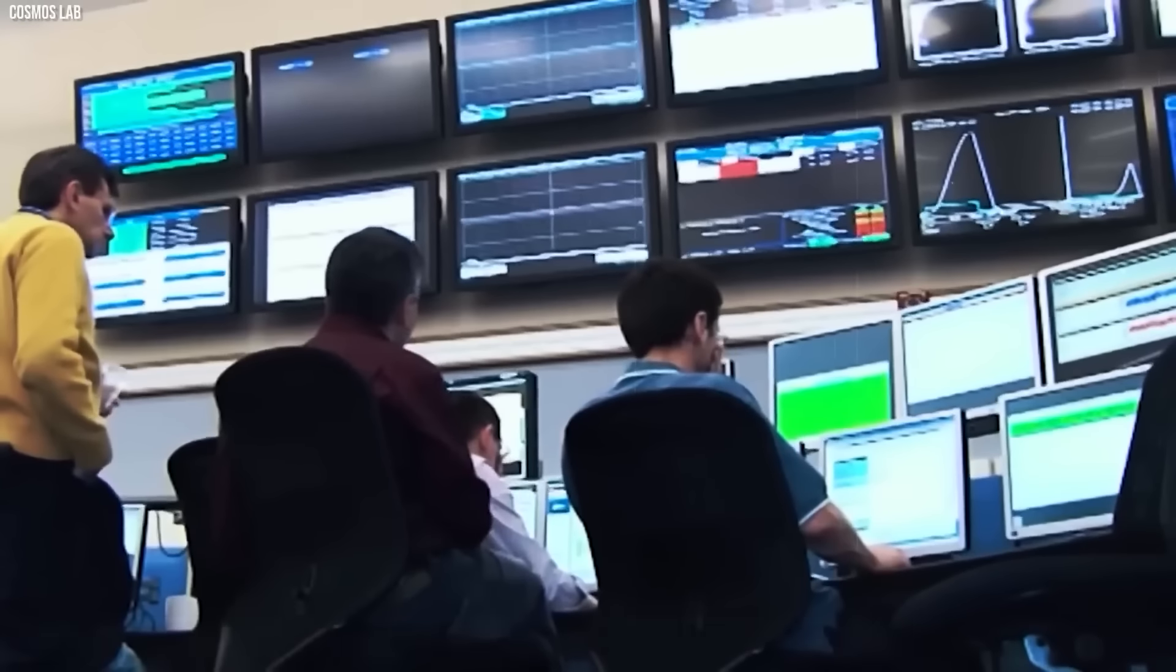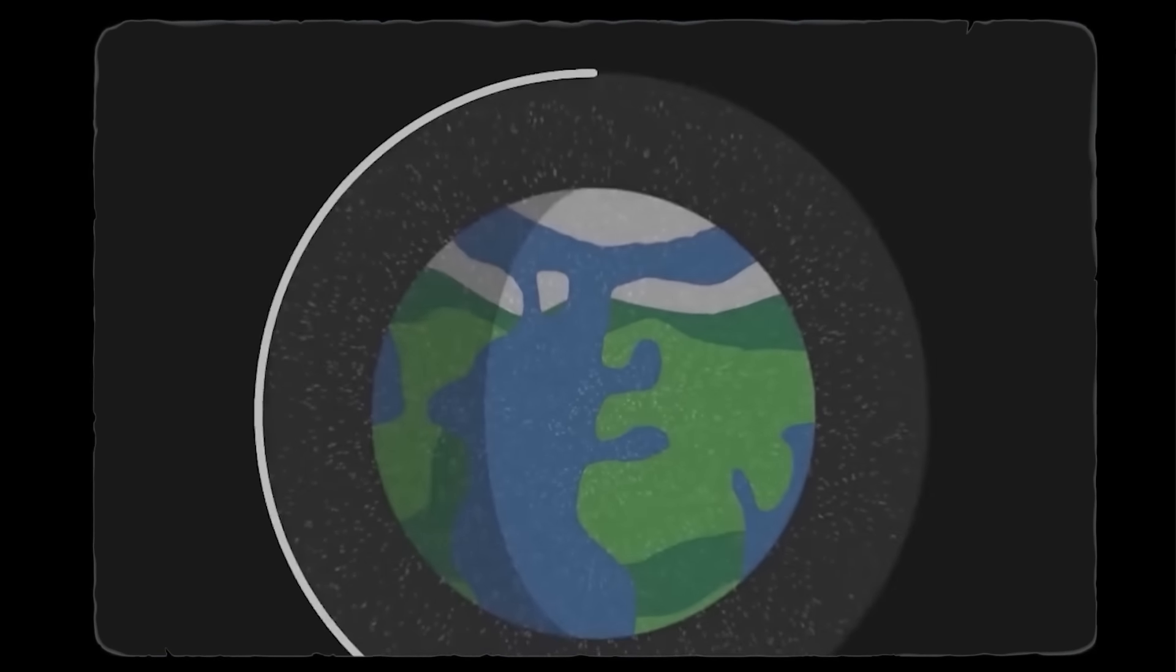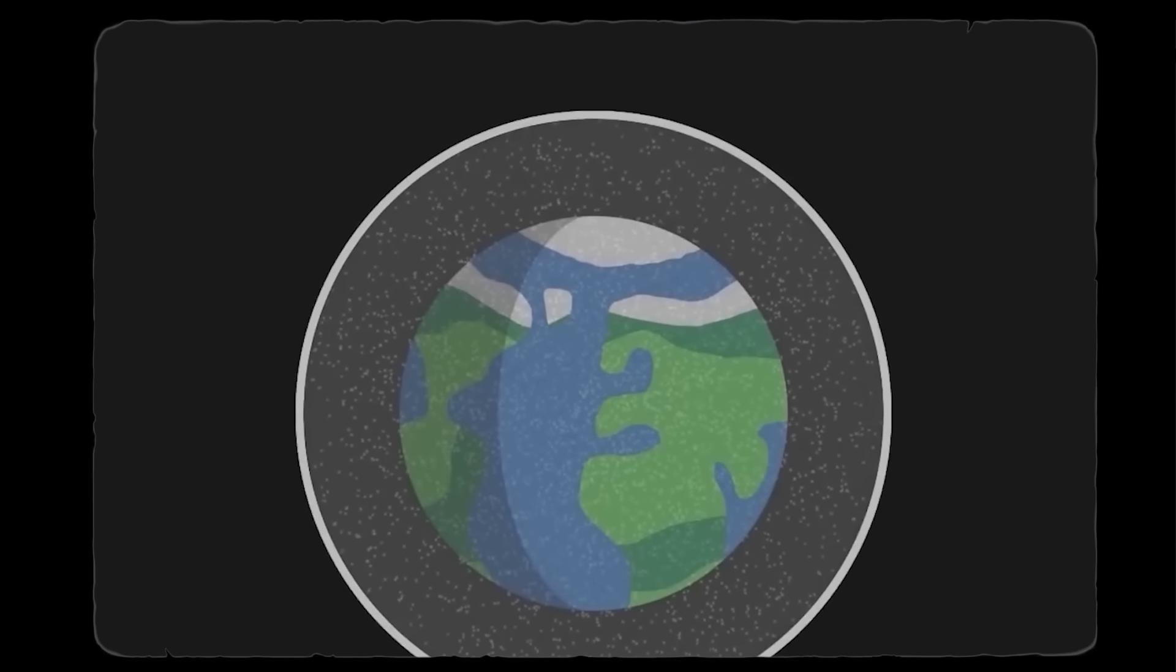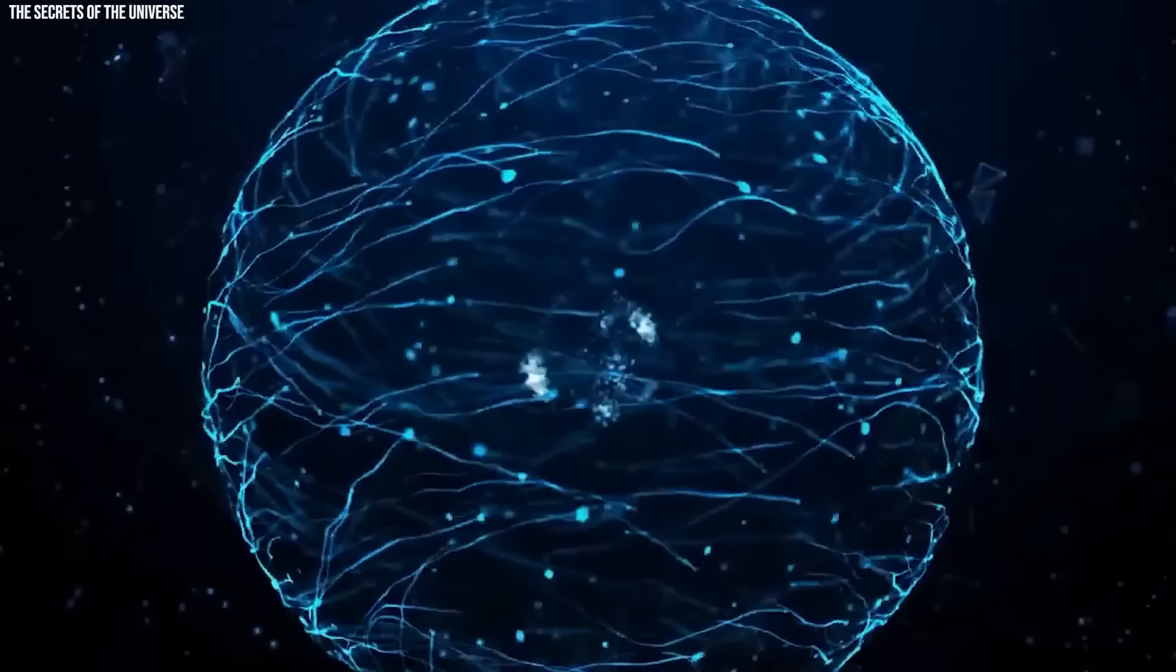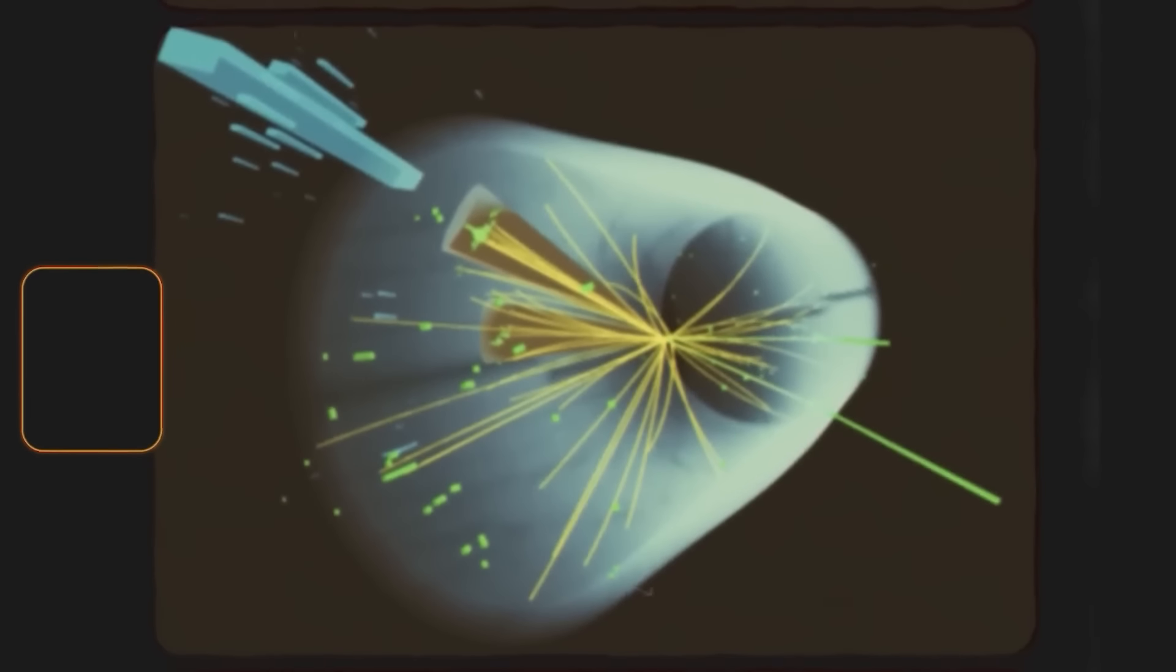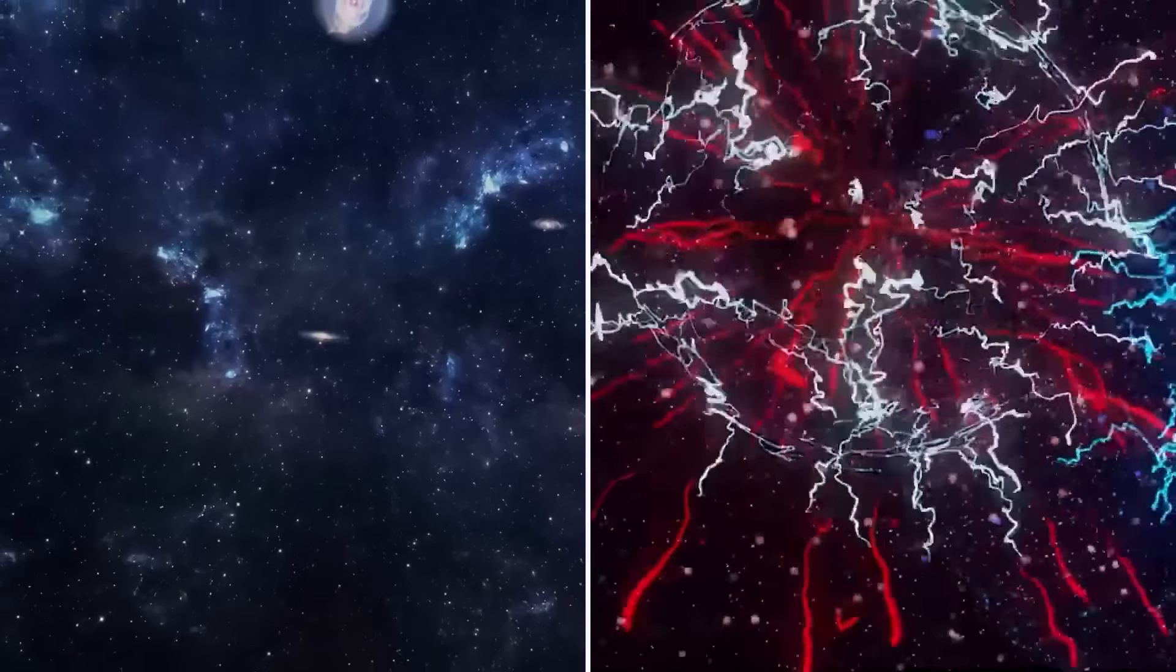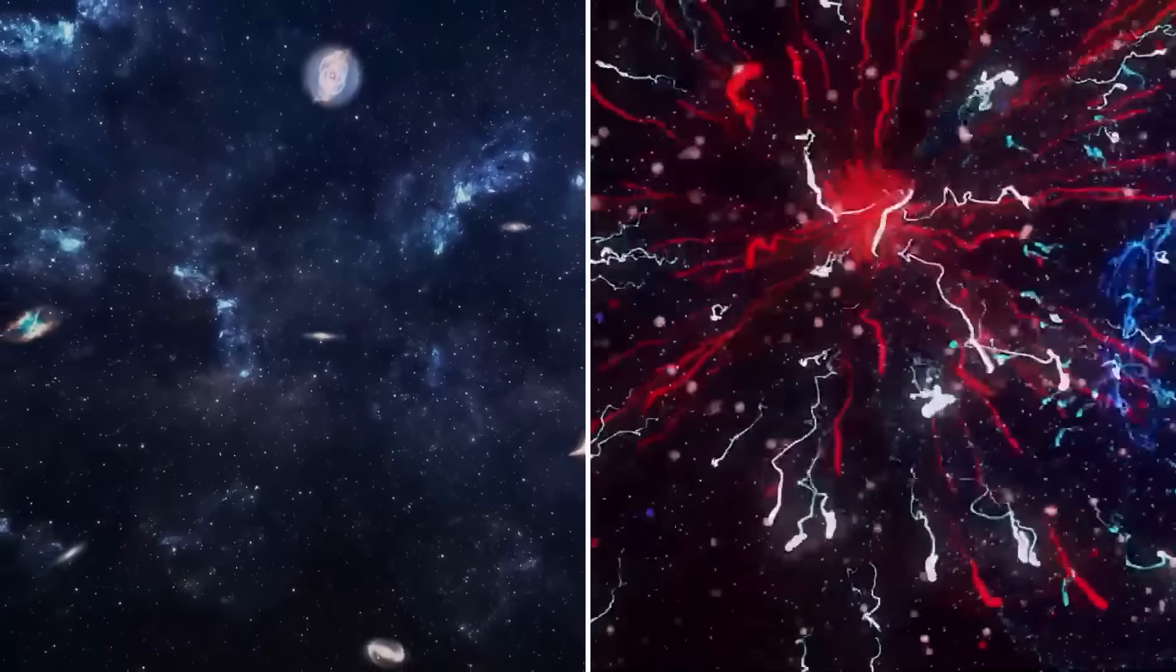Why do some scientists still research the Higgs boson? Apart from the necessity of precisely characterizing the new particle, scientists pursue Higgs boson research for two primary reasons. Firstly, they aim to comprehend how the physical vacuum of our universe originated in its early stages. Secondly, they seek to understand how this physical vacuum can maintain stability. The Higgs field is distinct, providing a non-zero mean expected potential energy to the physical vacuum, fundamentally shaping our universe.